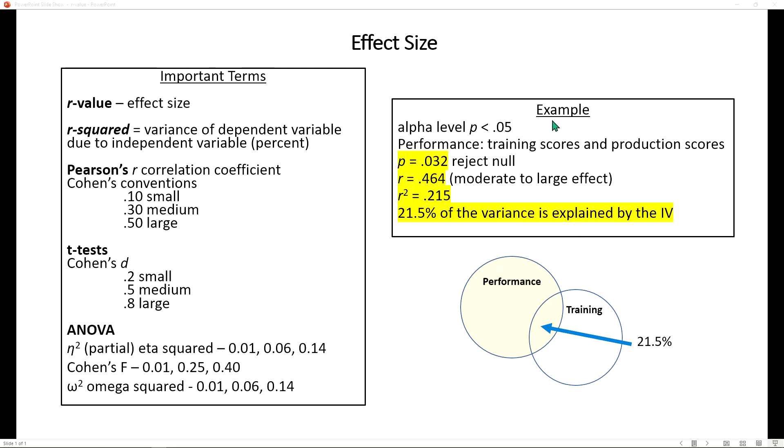Here's a practical example. In this example we are looking at a correlation between training scores and production scores. The alpha level needs to be at 0.05, and we determine that at 0.032 it is less than that, therefore we reject the null hypothesis.